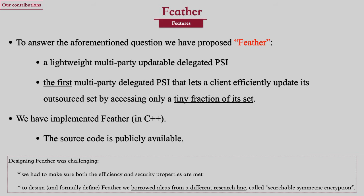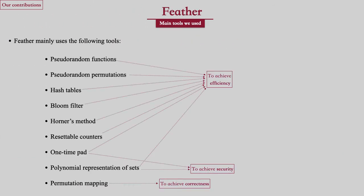To meet these aforementioned properties, we have proposed a protocol called FEATHER. It is the first multi-party delegated PSI that lets a client efficiently update its outsourced sets by accessing only a tiny fraction of its sets. We have also implemented FEATHER and the source code is publicly available. The main tools we used include set-to-random functions and permutations, hash tables, bloom filter, Horner's method, resettable counters, one-time pads, polynomial representation of sets, and permutation map.